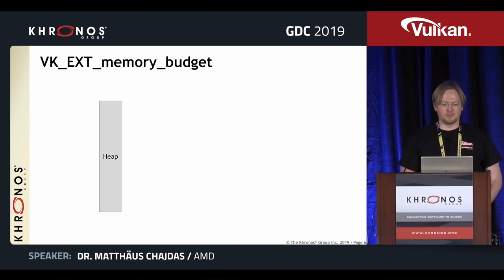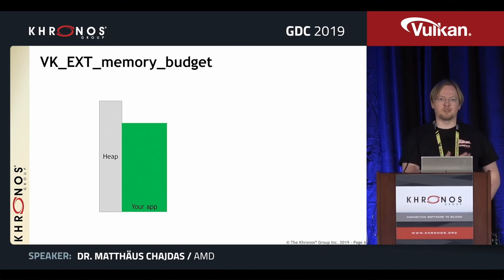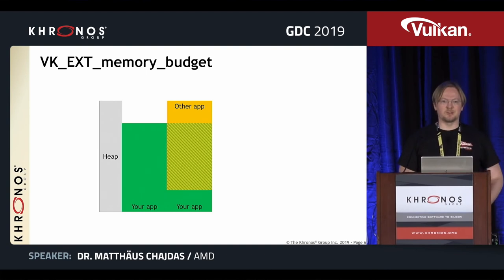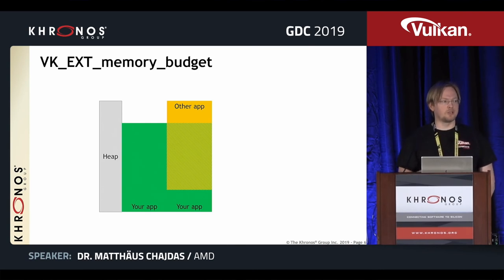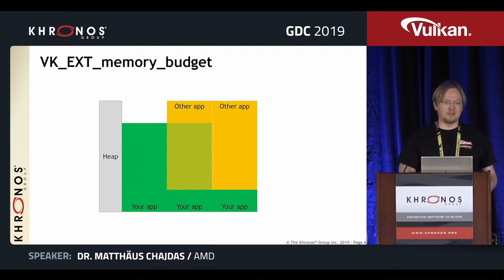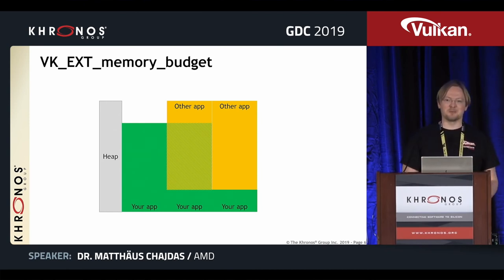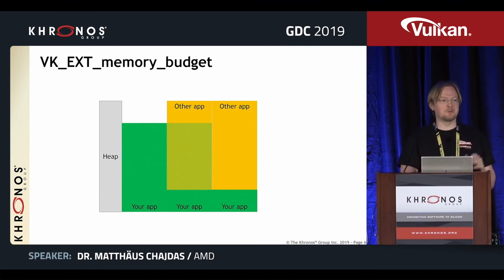Here's a quick example with an implementation with only one heap. Your application is using quite a bit of the heap but the budget allows it — that's fine. Then someone runs another application that's high priority because it's in the foreground, and it wants a large amount of memory. Now you get notified how much budget you have left, so you know how much to dump to continue running and avoid being randomly evicted from the system.